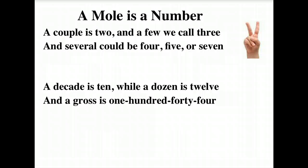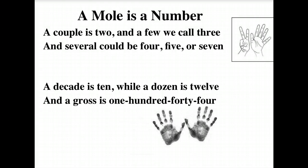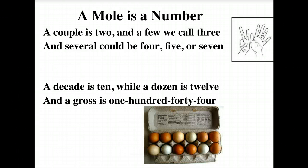A couple is two, and a few we call three, and several could be four, five, or seven. A decade is ten, while a dozen is twelve, and a gross is 144.